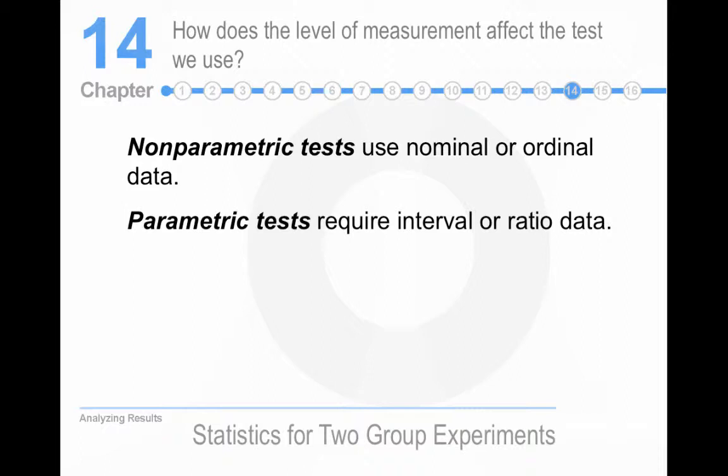Non-parametric tests use nominal or ordinal data, and parametric tests require interval or ratio. Generally, we prefer parametric statistics because we can do more sophisticated analyses of the data. Parametric statistics are based on a normal curve. However, we can do further analyses with them.